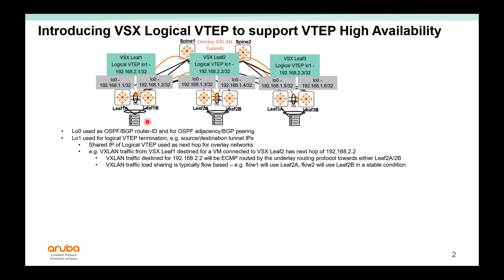If you have a server in rack 1 that's trying to communicate with a server in rack 2, the next hop of that will be 2.2, the tunnel next hop. The spines actually have equal cost for the 2.2 IP with two next hops, because both leaf 2A and 2B are connected to spine 1. If the traffic hits spine 1, you look forward to both 2A and 2B. VXLAN traffic load sharing is typically flow-based — flow 1 will always use leaf 2A, and flow 2 will use 2B in a stable condition. If the uplinks change or fail, they will actually reroute automatically to the available leaf.